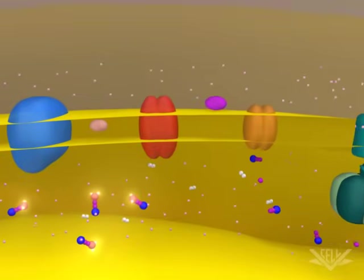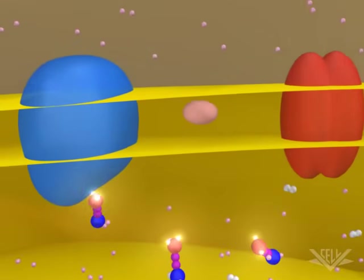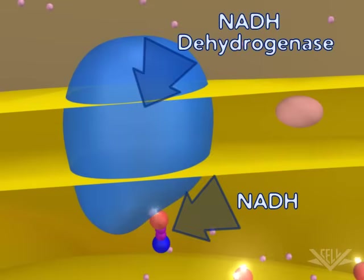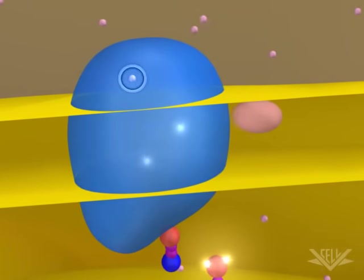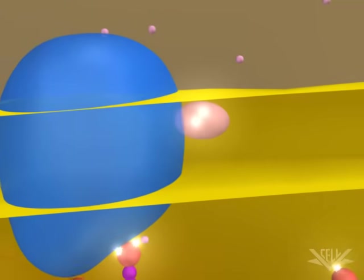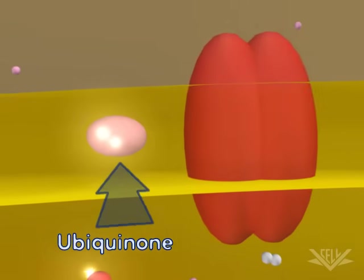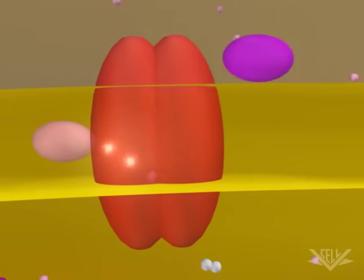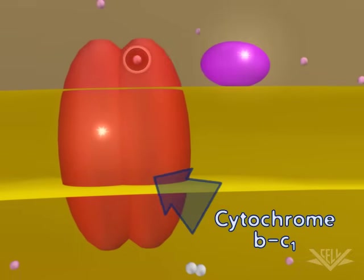At the start of the electron transport chain, two electrons are passed from NADH into the NADH dehydrogenase complex. Coupled with this transfer is the pumping of one hydrogen ion for each electron. Next, the two electrons are transferred to ubiquinone.